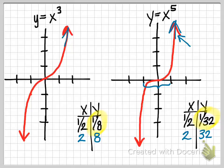So the higher the exponent, the flatter the graph is going to be between negative 1 and 1, and the steeper the graph is going to be on the ends as it grows more rapidly.